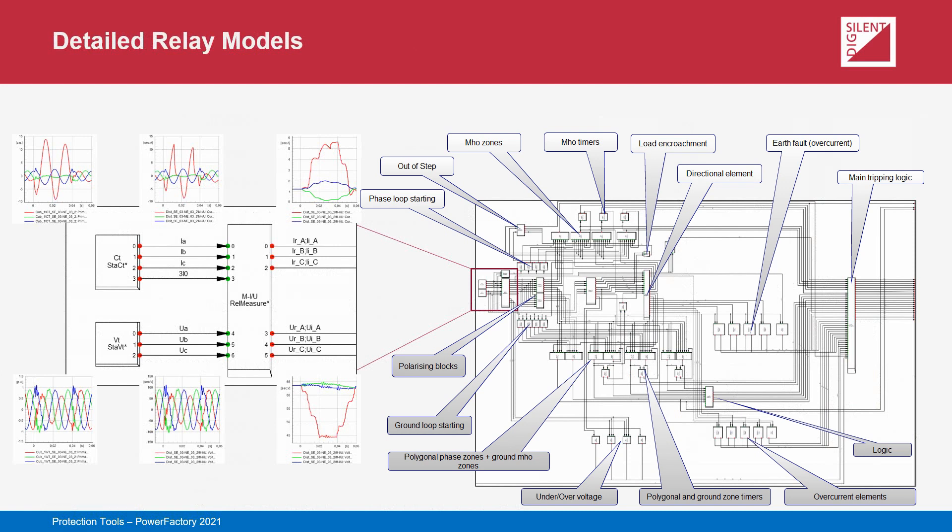A relay model is built from predefined building blocks, each of which relates to a specific function of the relay. The building blocks are highly configurable, allowing different relaying techniques used by different manufacturers and relay models to be represented. Each building block is a small model in and of itself. The building blocks are arranged within a block definition frame and interconnected using signal lines, with each block having input and output signals.